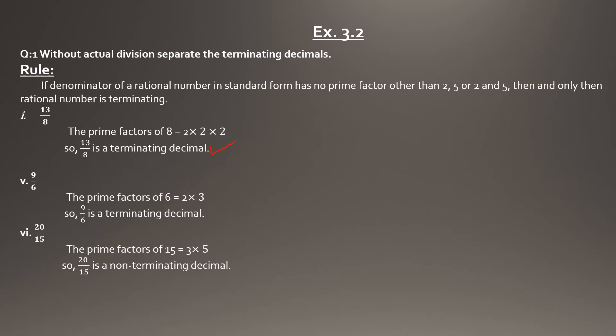Now consider 9 over 6. The factors of 6 are 2 × 3. Since 3 is present along with 2, it is non-terminating. A terminating decimal is one that stops after a finite number of digits, while a non-terminating decimal continues indefinitely.